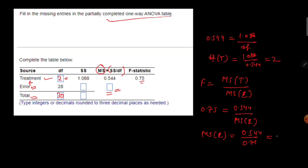So MS error will be 0.544 divided by 0.75, which gives us 0.725. This is our mean sum square of the error, that is 0.725.